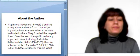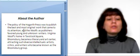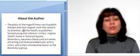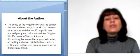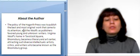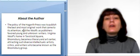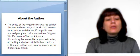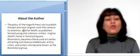The policy of the Hogarth Press was to publish the best and most original work that came to its attention, and the Woolfs as publishers favored young and unknown writers. Virginia Woolf's home in Tavistock Square, Bloomsbury, became a literary and art center, attracting diverse intellectuals, artists, critics, and writers, who became known as the Bloomsbury Group.